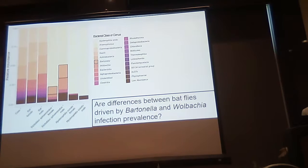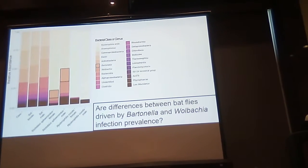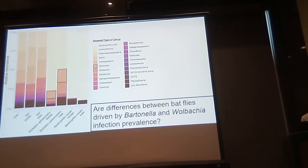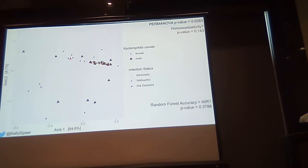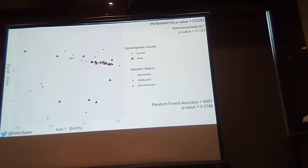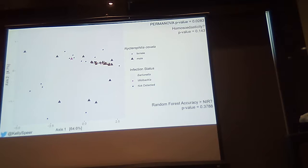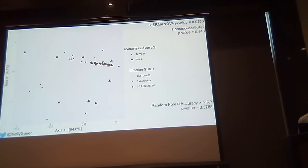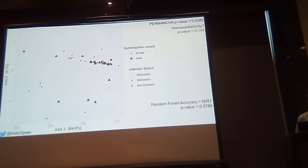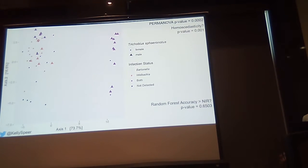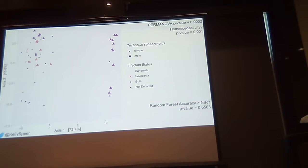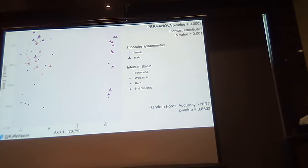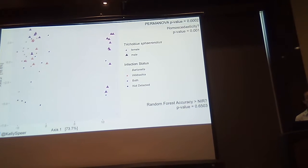What about the effects of Bartonella and Wolbachia — could those explain the remaining variance between the two bat fly species? Looking only at Nycterophilia coxata, shapes indicate different sexes and colors indicate infection status with Bartonella, Wolbachia, or no detection. We don't see a strong signal that infection status is differentiating microbiomes within this species. Looking at Trichobius spirotus, we see a much higher prevalence of Wolbachia and Bartonella, plus many co-infections not detected in the other species. Using random forests, we are still not able to differentiate microbiomes within this species using infection status.